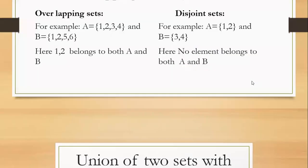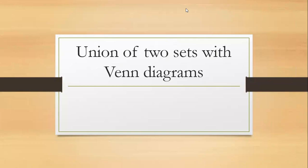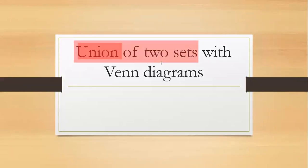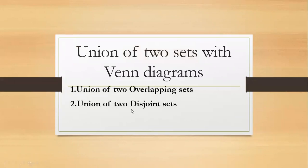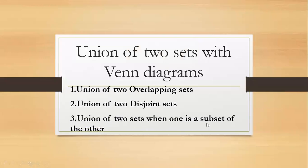Now, union of two sets with Venn diagram. What is meant by union? Union means combining. Union of two sets means combining two sets together. In this topic, we are going to discuss union of two overlapping sets, disjoint sets, and union of two sets when one is a subset of the other. But before starting this, let's discuss what is a Venn diagram.